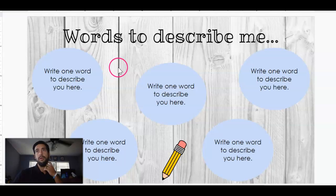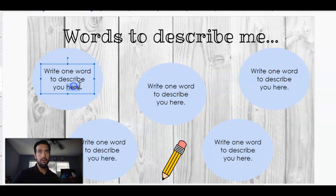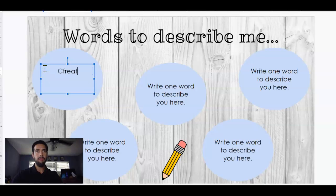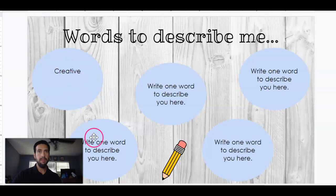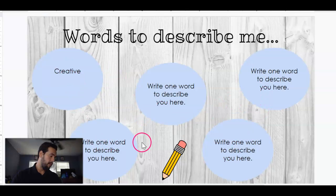Next one — words to describe me. Write one word to describe you here. So I can say I'm creative — that's one word that describes me. So this page should be pretty simple. I'm only required to write five words.